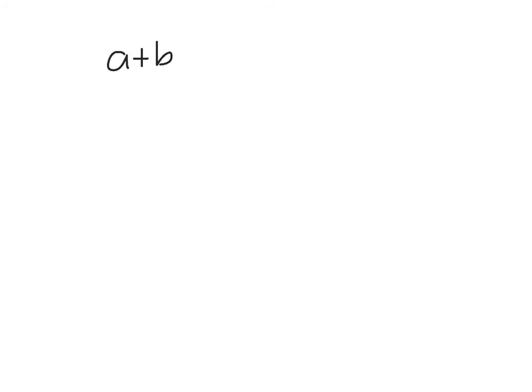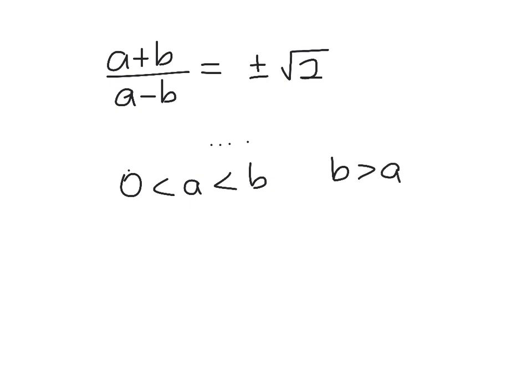So there are two situations in the general case. (a + b) over (a - b) could be either the positive or the negative square root of 2. But now we go back to our initial conditions and have a look at what we had. We've got 0 is less than a is less than b. So they're both positive, and b is bigger than a. That means a plus b is always going to be positive, and a minus b is going to be negative.